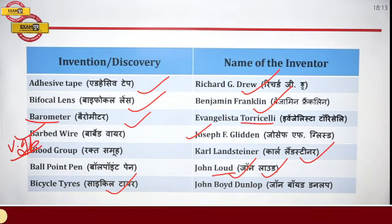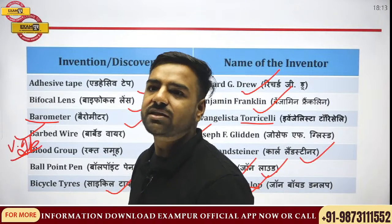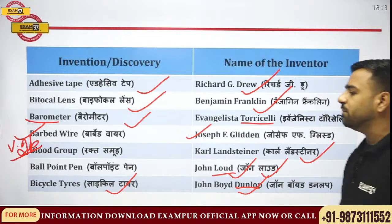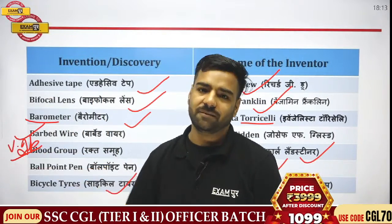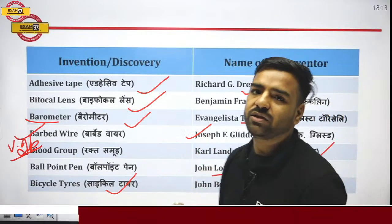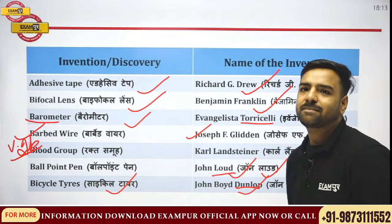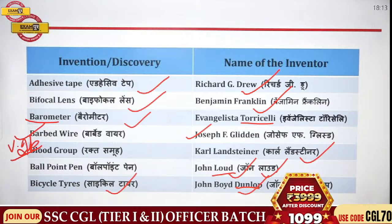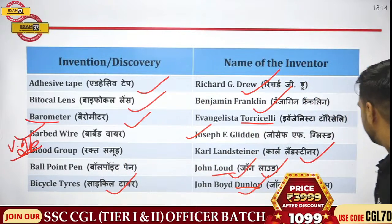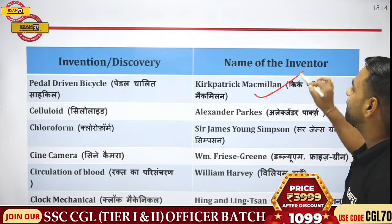If I talk about bicycle tires, they were discovered by John Boyd Dunlop. You may have seen the Dunlop company — they also make mattresses. Next, who discovered the pedal-driven bicycle? That would be Macmillan. These are things we studied in the fourth and fifth standard, and these questions are asked again in competitive exams.